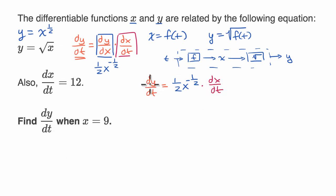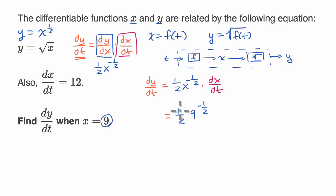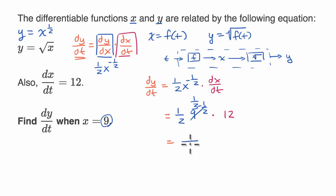We want to find dy/dt. They tell us x equals nine and dx/dt equals twelve, so we have all the information needed. Plugging in: dy/dt equals one-half times nine to the negative one-half, times twelve. Nine to the one-half is three, so nine to the negative one-half is one-third. Therefore: one-half times one-third is one-sixth, times twelve gives twelve-sixths, which equals two. The derivative of y with respect to t when x equals nine and dx/dt equals twelve is two.